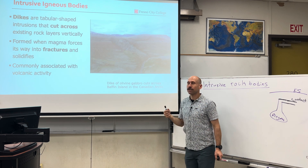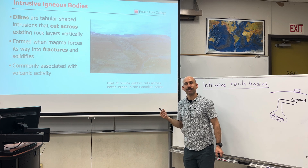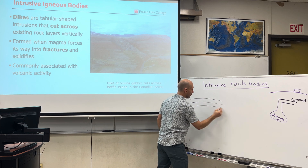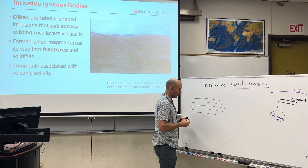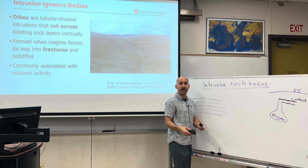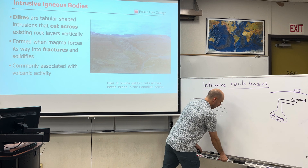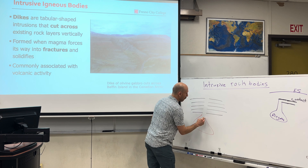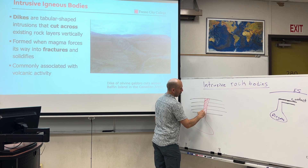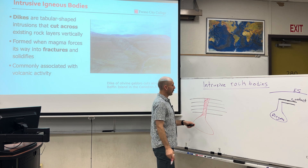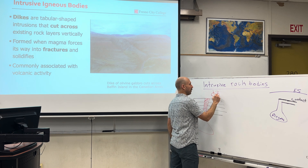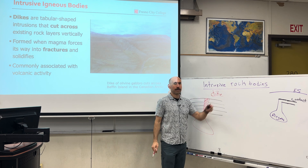Certain orientations of rocks will create certain features. Let's say you have layers of sedimentary rocks — a break in the rock with displacement is a fault, and a break without displacement is a joint. If there's a break without displacement that allows magma to come up and fill that area, and that magma solidifies underneath the surface intruding into surrounding rock, because it cuts across, we call this an igneous dike — one of our types of igneous rock bodies.